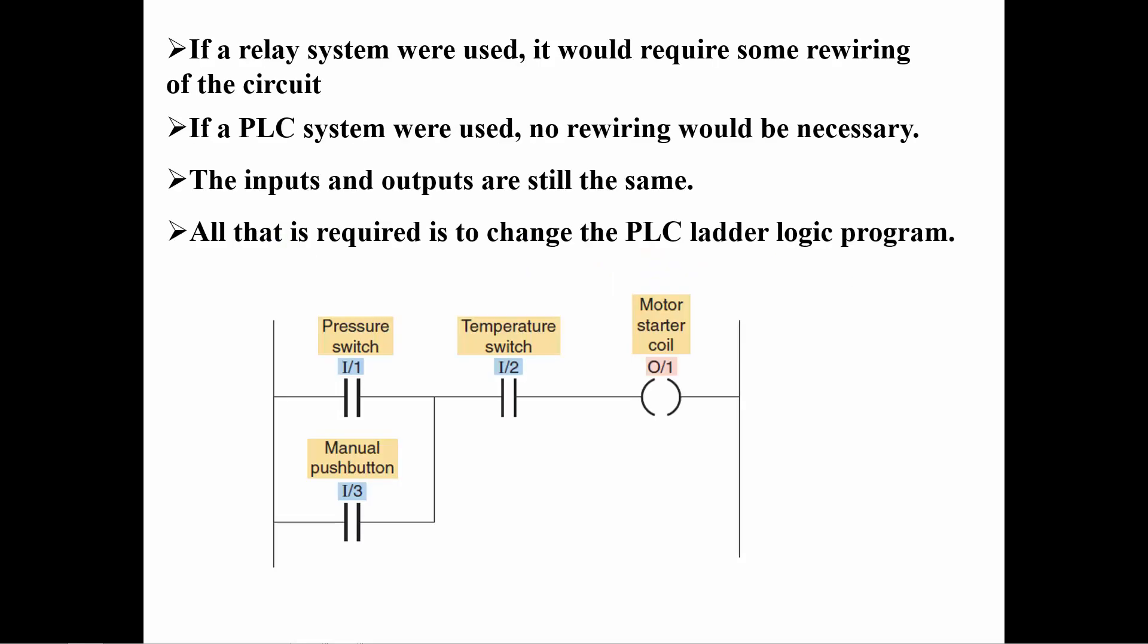If it is necessary to modify the logic that determines when the motor starter coil will turn on, it is relatively simple to make the change with the PLC. With a hard-wired relay control circuit, the technician would have to find the connections of the wires from the sensors and reconnect them in the new configuration.